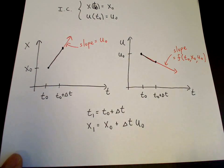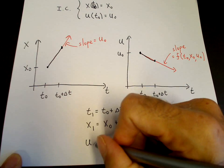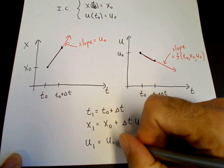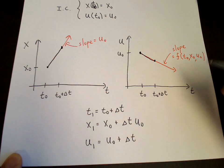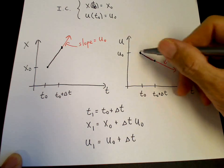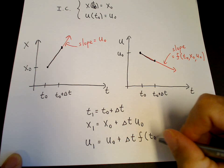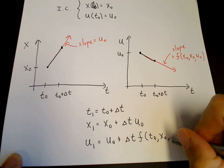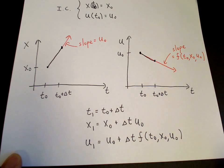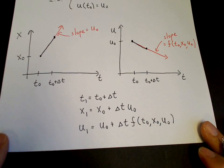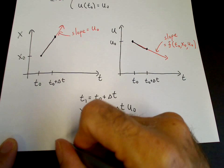And then u1 is equal to u naught plus delta t times the slope here, which is f of t naught, x naught, u naught. And that's the Euler method because then we just iterate.